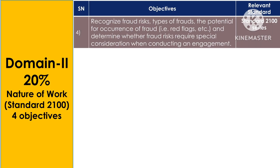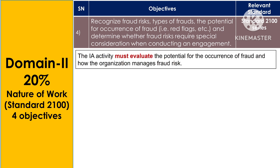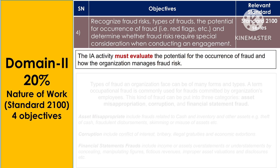The most interesting part of Domain 2 is fraud risk — the fourth objective. This covers recognizing fraud risk, types of fraud, the potential for occurrence of fraud — red flags — and determining whether fraud risk requires special consideration when conducting an engagement. The internal audit activity must evaluate the potential for occurrence of fraud and how the organization manages fraud risk.